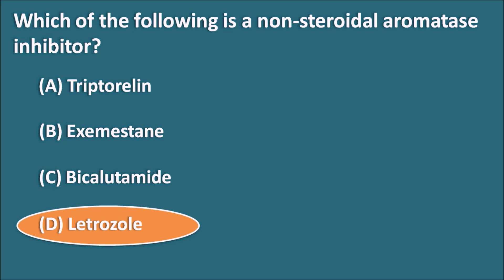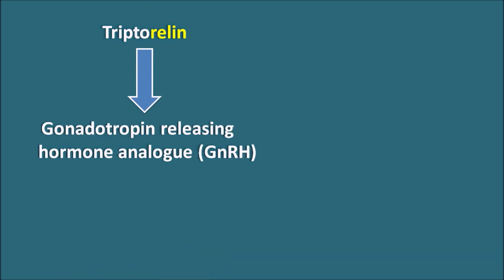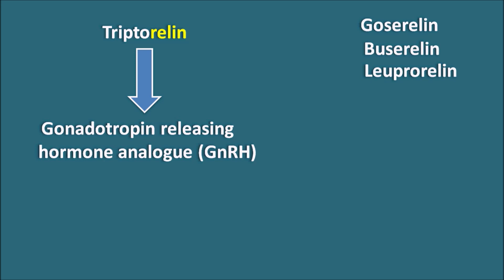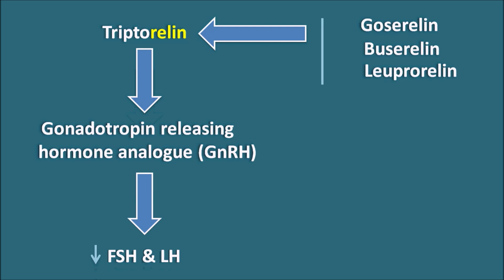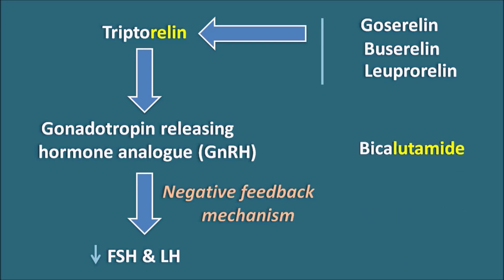Triptorelin — the suffix '-relin' indicates it is a gonadotropin-releasing hormone (GnRH) analog, along with drugs like goserelin, buserelin, and leuprorelin. When given externally, GnRH analogs inhibit FSH and LH secretion via a negative feedback mechanism. Bicalutamide — the suffix '-lutamide' indicates it is an anti-androgen, used particularly in the treatment of prostate cancer.